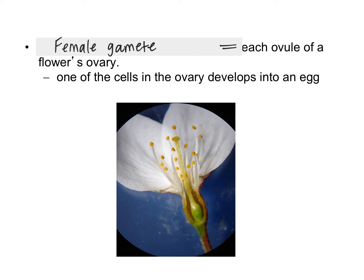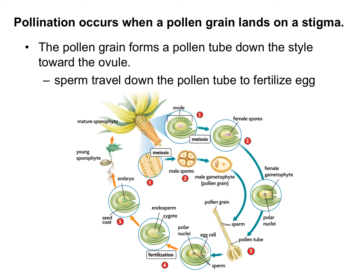The female gamete is each ovule in the flower's ovary, and one of those cells will develop into an egg which can become fertilized. Pollination begins when a pollen grain lands on the sticky stigma. The male spores divide by mitosis to make the pollen grain with two haploid sperm inside. That pollen grain lands on the sticky stigma of the carpel, and grows a pollen tube down the style until it reaches the ovules in the ovary.